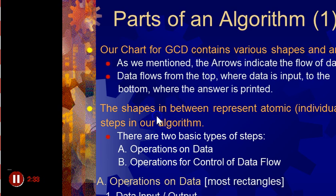Okay, I really don't want to get too much into this, but let's see what we have to do here. Our chart for the greatest common denominator contains various shapes and arrows. That's true. It has a rectangle here, it has this kind of shape here, it has this diamond here, it has these arrows, it has this point here, and so on.